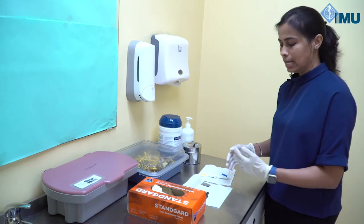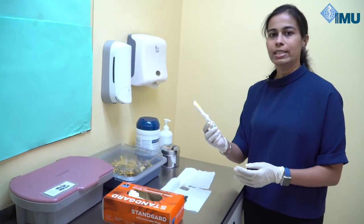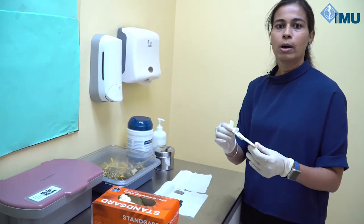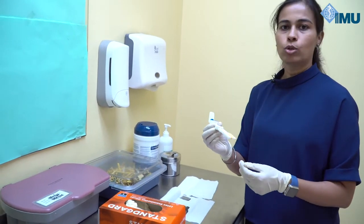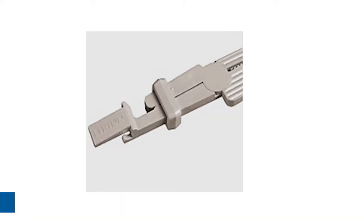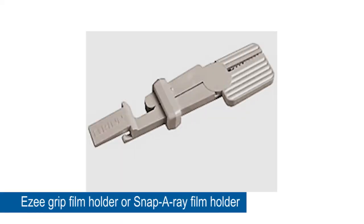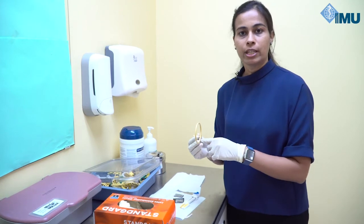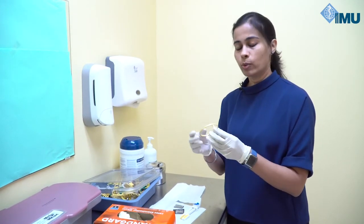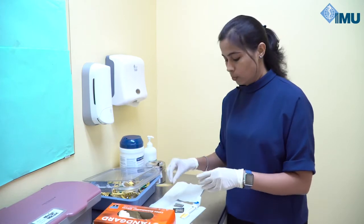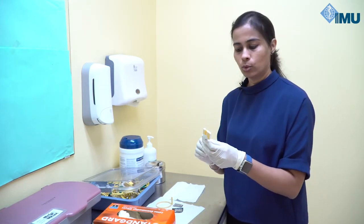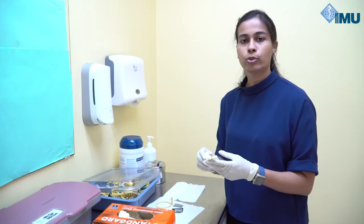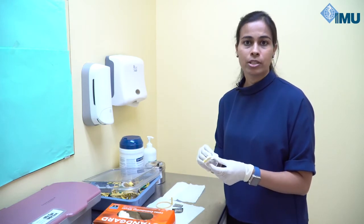The next step is to select the right film holder. This is what we call the easy grip film holder, also called the snap-array film holder, and it is meant for bisecting angle technique. The same film holder can be used for anterior and posterior teeth. Unlike paralleling technique where we use an aiming ring to align the x-ray tube head, the snap-array holder has no aiming ring, so it is quite technique-sensitive. You must remember the point of entry and the angulation, which we will discuss later.